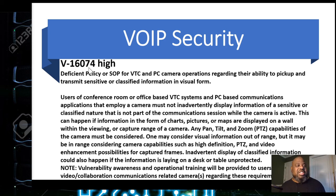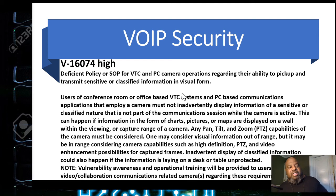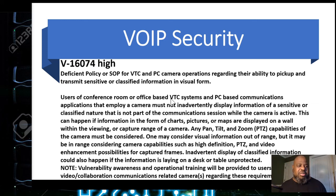Vulnerability 160-74 high: deficient policy or SOP for FTC and PC camera operations regarding the ability to pick up and transmit sensitive to classified information in a visual form. A lot of times your VoIP or phone system has a camera because many users are doing it through a PC. You need policies to govern what those cameras can capture — especially with so many people being remote, you need to consider what your camera is seeing at home and whether that is appropriate.